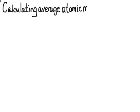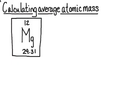Welcome to the uChem tutorial on calculating average atomic mass. We're going to look at a periodic table entry, here is the entry for magnesium. I'm going to look at that number down at the bottom, 24.31, which is the average atomic mass. I'm going to show you how that's calculated and how to determine it if you're given the necessary information.